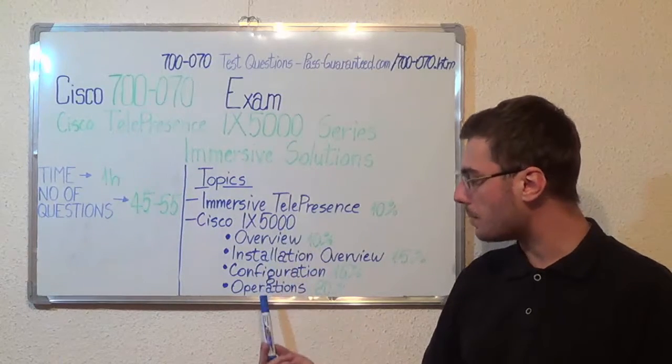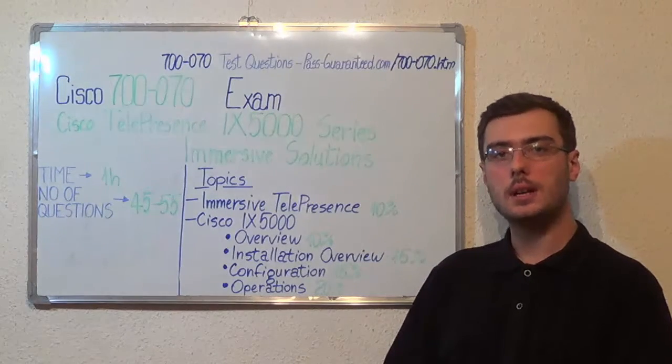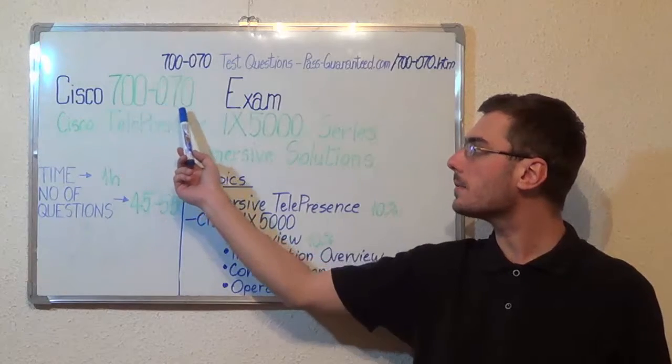Cisco IX 5000 Operations, with 20%. You can visit bestguarantee.com and successfully pass the Cisco 700-070 exam.